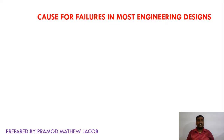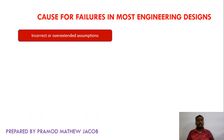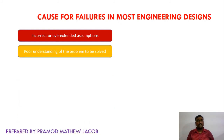Next, what are the causes of failures in most engineering designs? The first one is incorrect or over-extended assumptions. The designer may assume something about how the system will behave at a particular condition, but it may not always be true, and this may lead to system failure. The next cause is poor understanding of the problem to be solved. The designer should clearly understand what is to be solved, what the various constraints are, and where the system will be applied. If the designer fails to understand the problem clearly and precisely, there is a chance of failure.